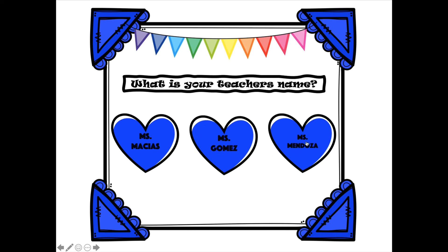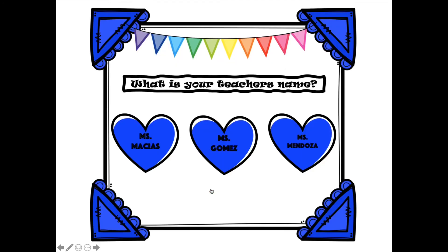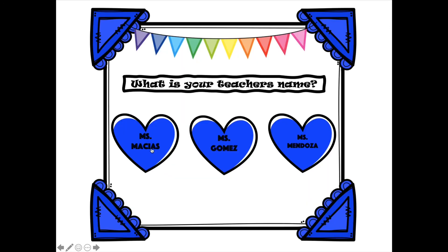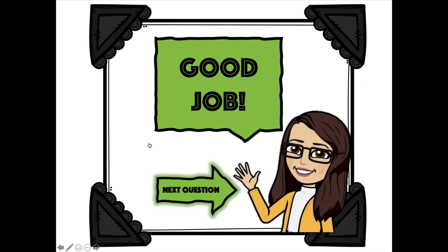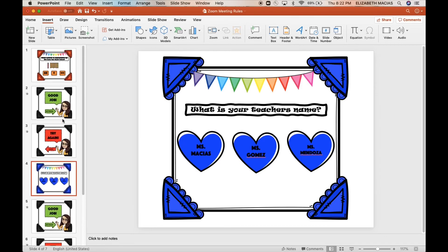I'm going to first click the incorrect ones to test them. If you hover over the hearts, it gives you the option to click — that's because they're hyperlinked. My name is not Miss Mendoza, so it should take me to the incorrect page: 'No worries, try again — click the arrow to go back.' I click the arrow and go back, test the other incorrect one, and then click Miss Macias — 'Good job! Click below to go to the next question.' It takes me to the blank Slide 7, which I haven't worked on yet. That is how you hyperlink and create an interactive PowerPoint!